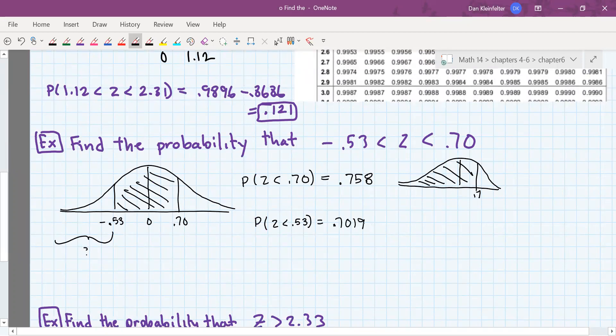Okay, that's the area up to positive 0.53, 0.7019. So then, of course, we want the complement of that, which is 0.2981.